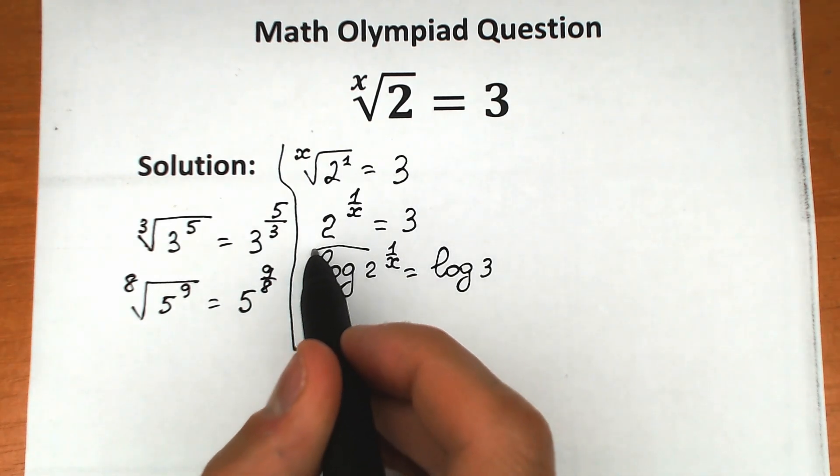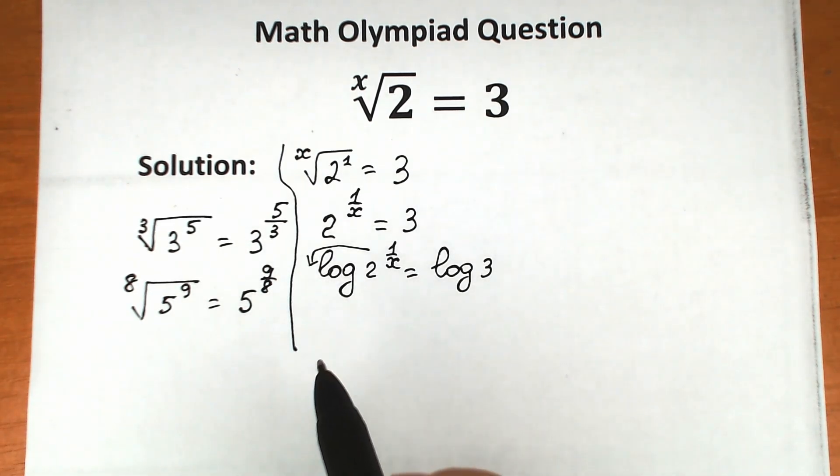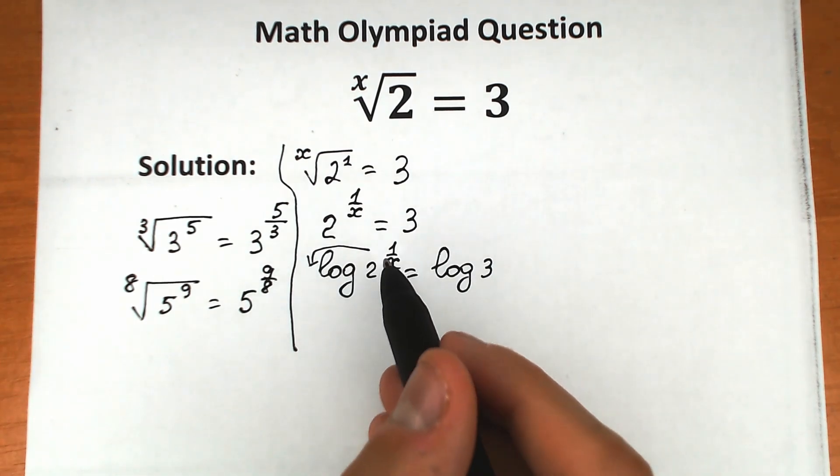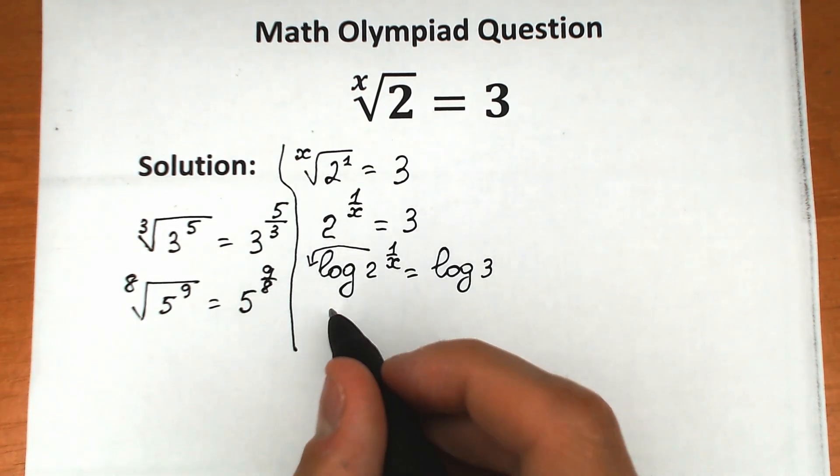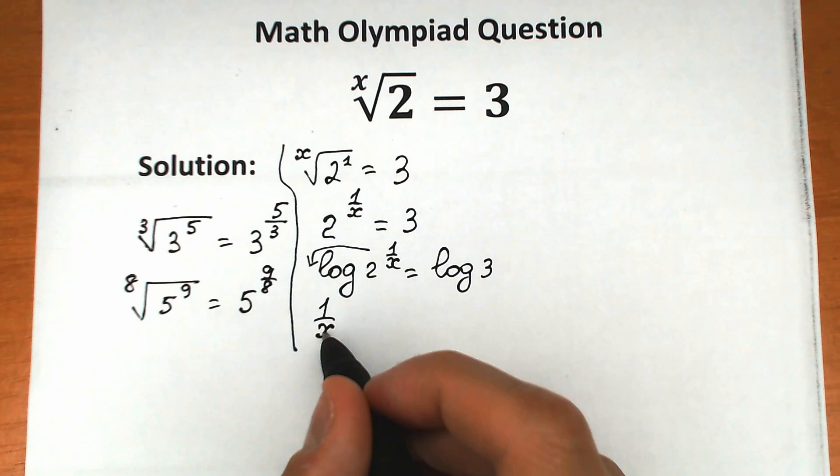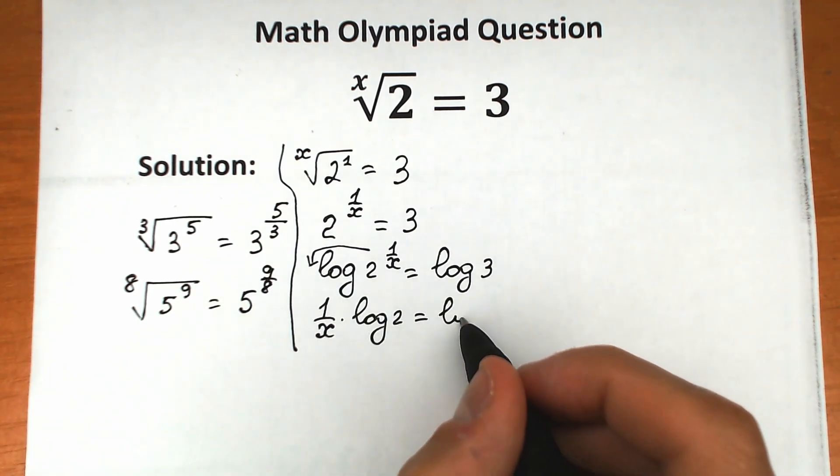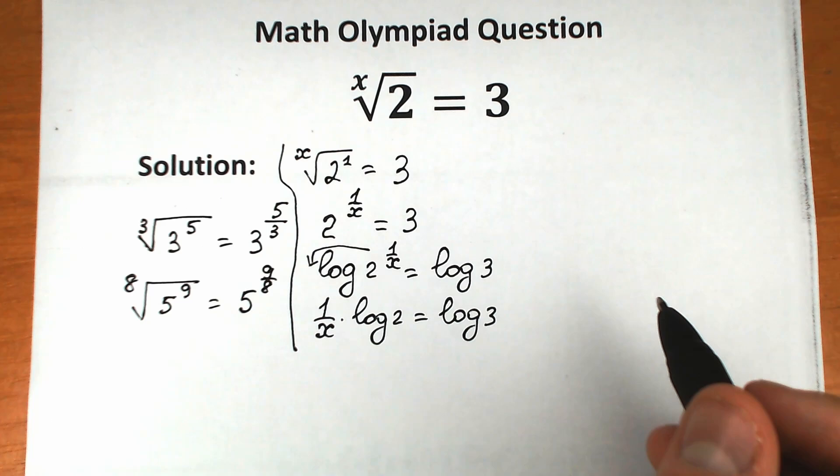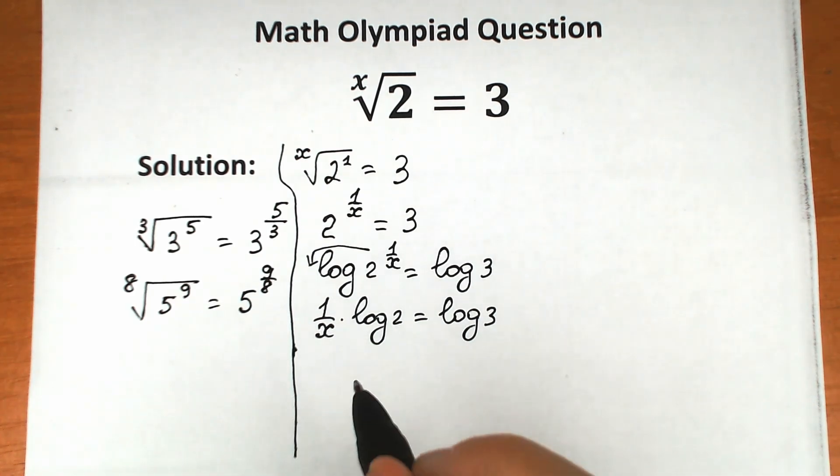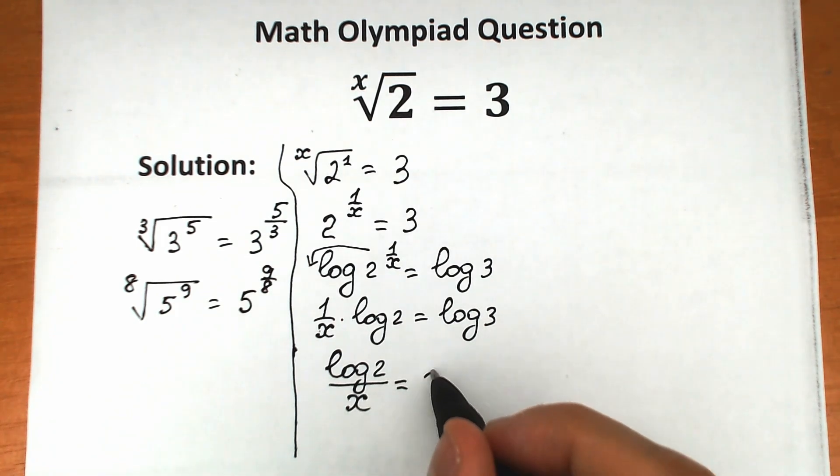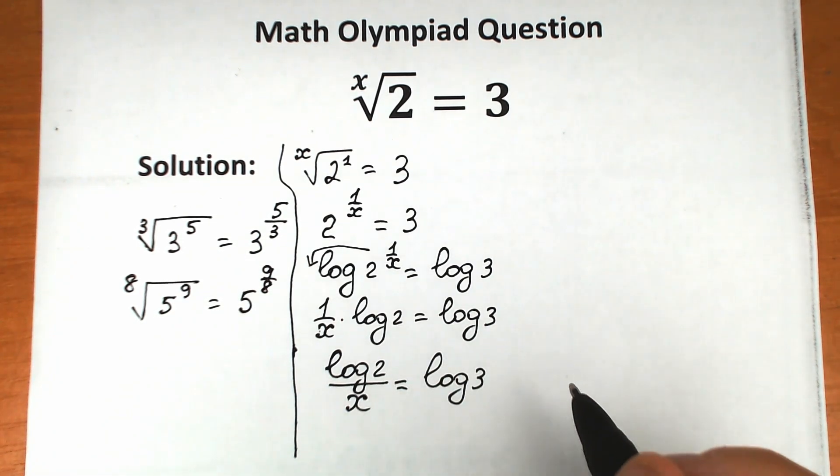1 over x is our power of 2, and it goes in front of the log because this is the main log property - that's why we do this. We want to bring 1 over x out here. So we have 1 over x times log 2 equals log 3. We can rewrite this another way as log 2 over x equals log 3.